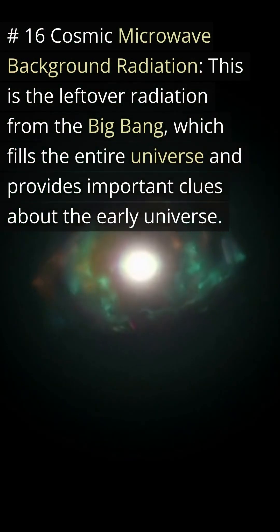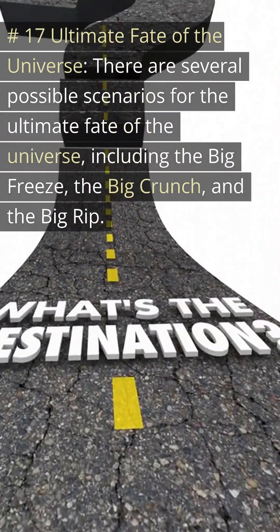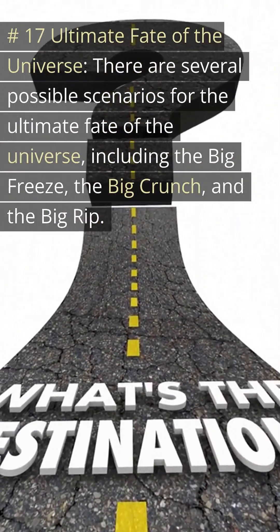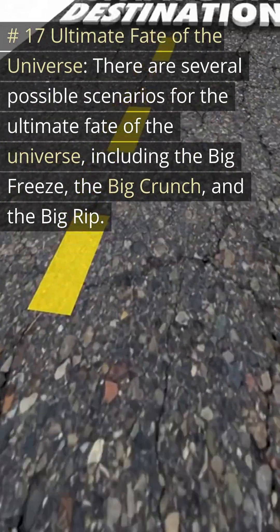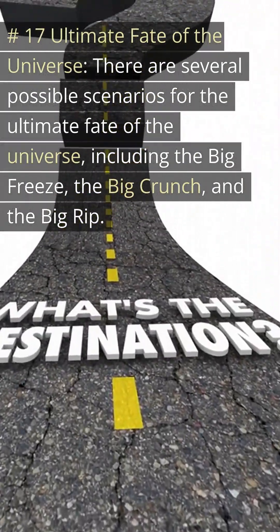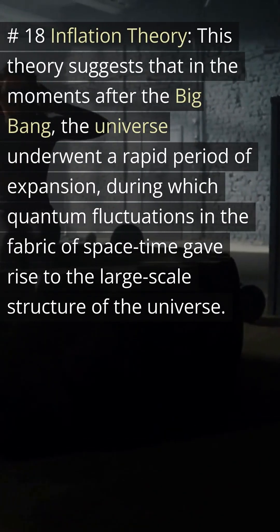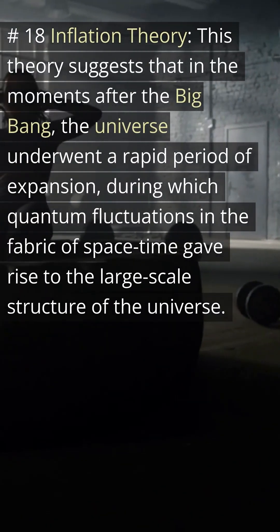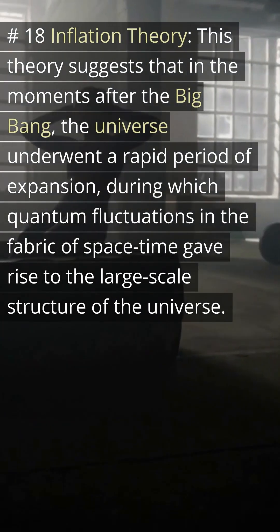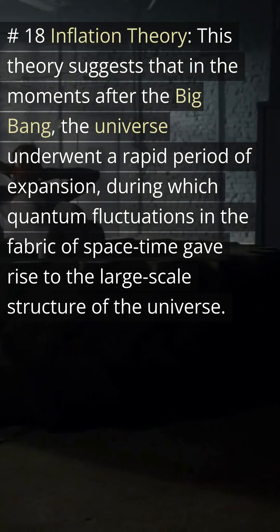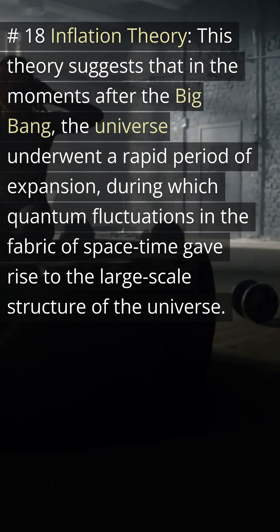Number seventeen: ultimate fate of the universe — there are several possible scenarios for the ultimate fate of the universe, including the big freeze, the big crunch, and the big rip. Number eighteen: inflation theory — this theory suggests that in the moments after the Big Bang, the universe underwent a rapid period of expansion during which quantum fluctuations in the fabric of space-time gave rise to the large-scale structure of the universe.